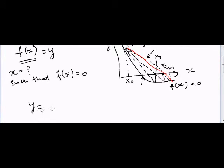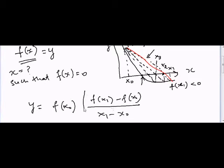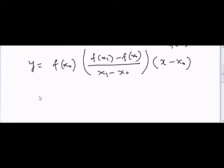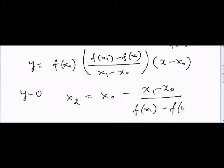y is equal to f of x₀ plus (f of x₁ minus f of x₀) divided by (x₁ minus x₀), so this is the slope, times (x minus x₀). Now if you want to solve for x₂, what we need to do is we need to put y equal to zero, and in this case x₂ will be equal to x₀ minus (x₁ minus x₀) divided by (f of x₁ minus f of x₀) times f of x₀.